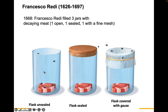Maggots are larval flies, or baby flies. When flies have access to the rotting meat, they lay their eggs, and the larvae that hatch feed on that meat and thrive. If it's sealed, the flies can't access the meat, so they don't lay their eggs. With the gauze, the flies can smell the food but can't get to it, so they lay their eggs on the gauze, but when the maggots hatch, they have nothing to feed on and shrivel up and die.